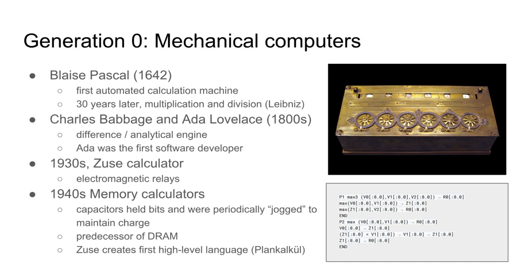This is a clear predecessor of what we would call modern DRAM. Also in the 1940s, Konrad Zuse created what is notably the first high-level language — the German name means 'planned calculus.' What makes it a high-level language is that it was wholly disconnected from the machine instructions of the hardware it might run on, making it theoretically platform independent in some ways.